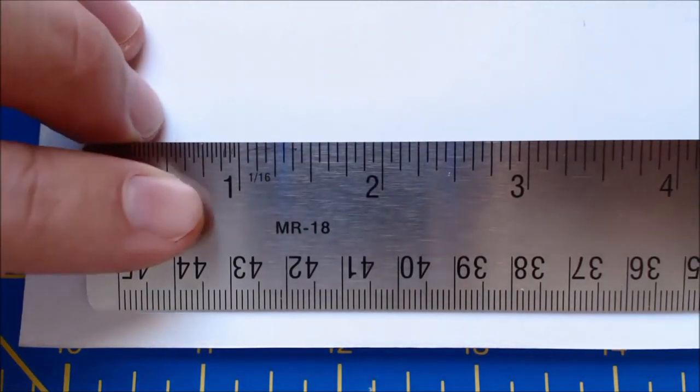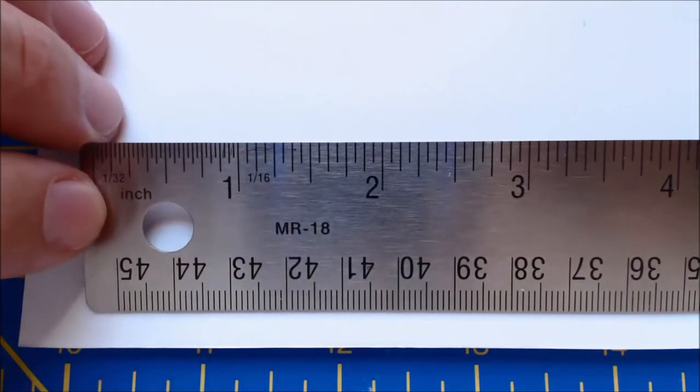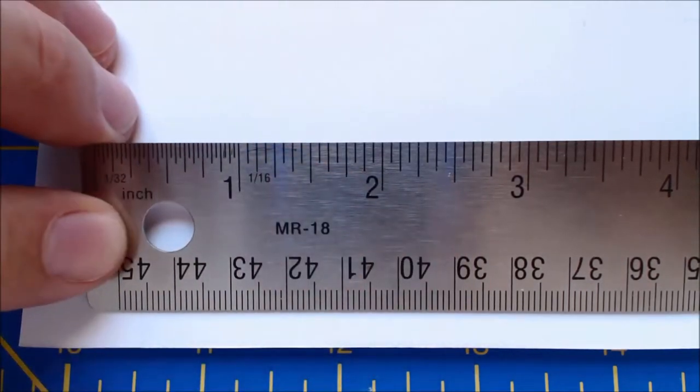Now on any ruler, you're going to notice that the large marks mark off the major units. So in this case, it's an inch ruler. We have one, two, three, and those are the largest marks that we can see on the ruler.